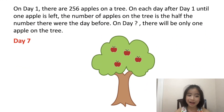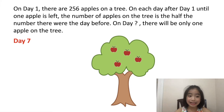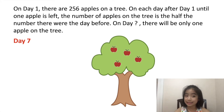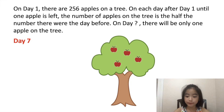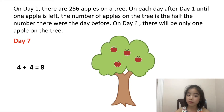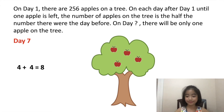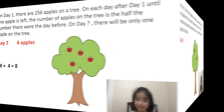Now let's figure out how many apples there are on day seven. We know that on day six there are eight apples. So on day seven, there is half the number of apples on day six, which is four, because four plus four equals eight. So on day seven, there are four apples.